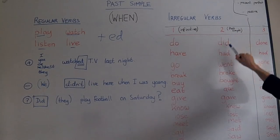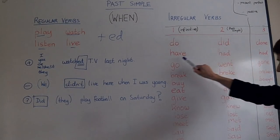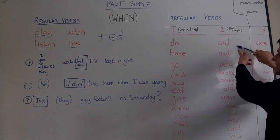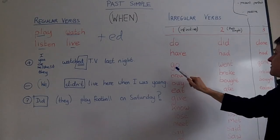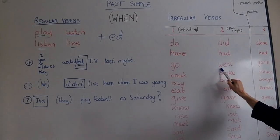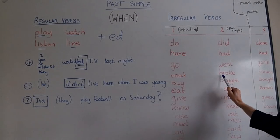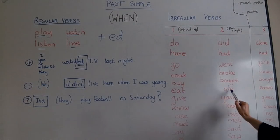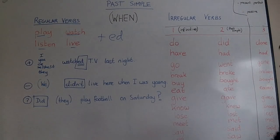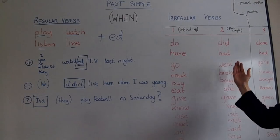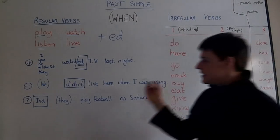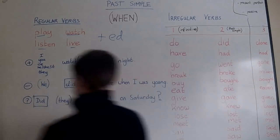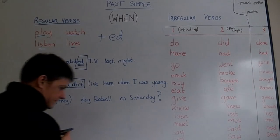It's 'do' and 'did' for past simple. Have and had. Go and went. Break, broke. Buy, bought. Eat, ate. Give, gave. Know, knew. So these work in a different way. We just use the second form in the positive sentence.